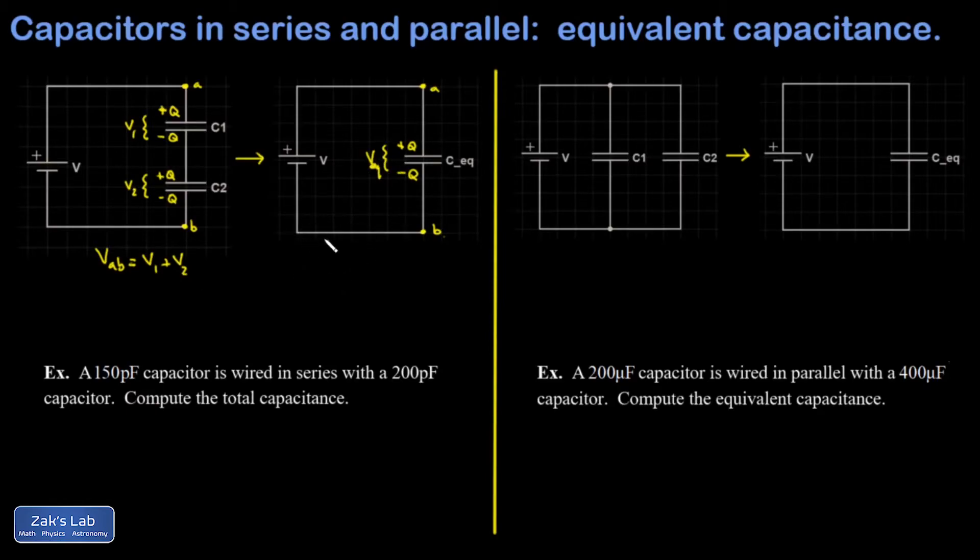And that potential difference across the equivalent capacitor, well, that's equal to the potential difference from A to B because A is directly connected to the high side of the capacitor and B to the low side of the capacitor. So setting these two expressions for VAB equal to each other, I find that V equivalent is equal to V1 plus V2.